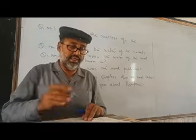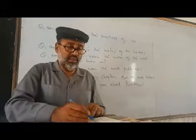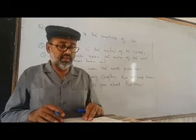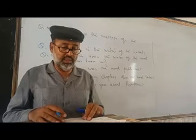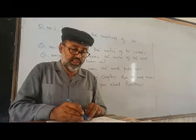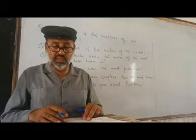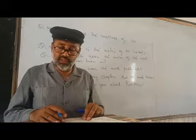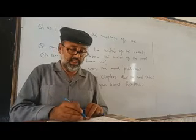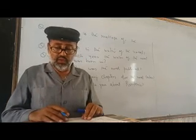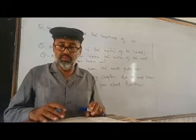Question number thirty-eight: Who kills Michael and why? Question number thirty-nine: What truth is told to Princess Flavia in chapter number twenty of the novel? Question number forty: How often does Rudolf Rassendyll visit Dresden after he leaves Strelsau? Question number forty-one: By whom is the story of the novel narrated?